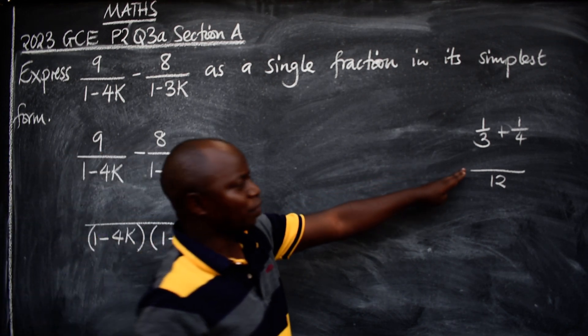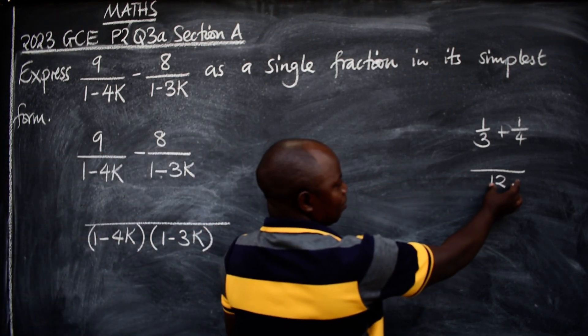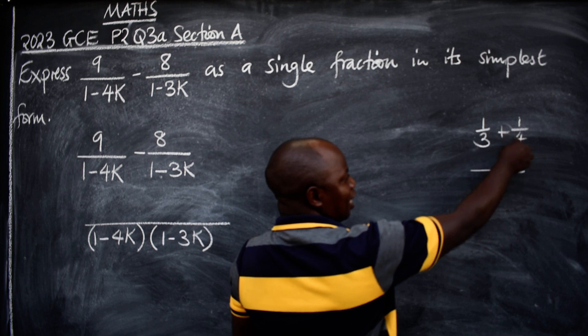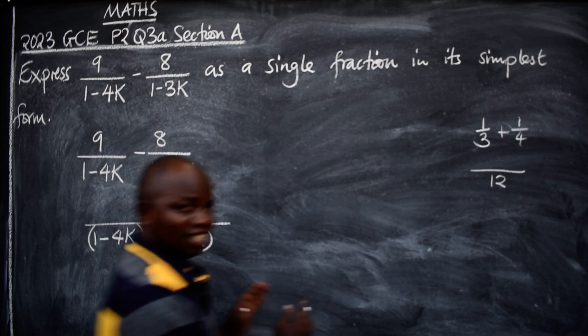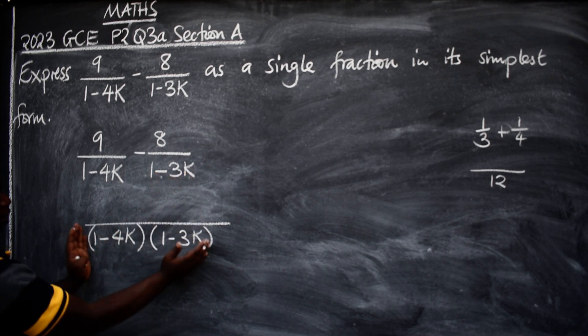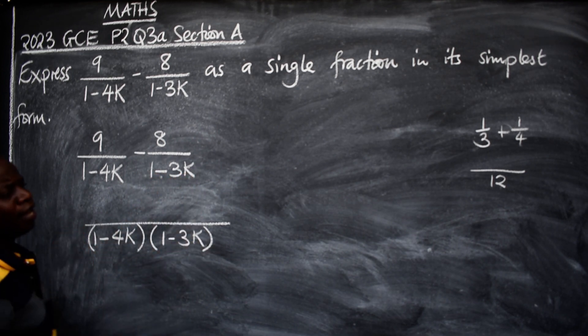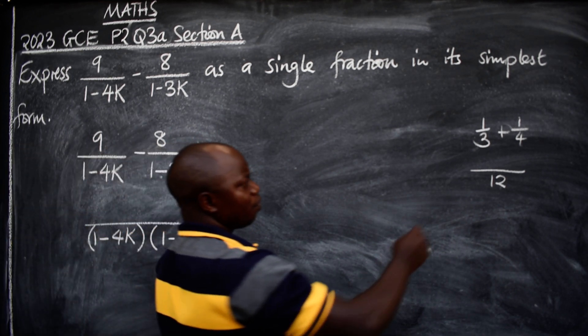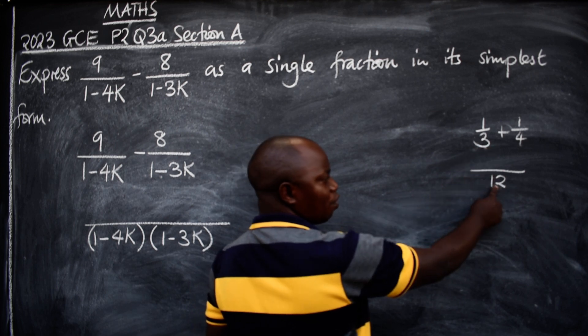Here, when we get the 12, which can be 3 times 4, you get the 12. That is exactly the same thing that I've done here. This time, this gives me that.